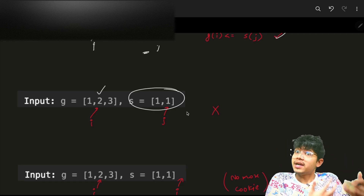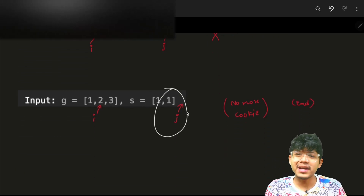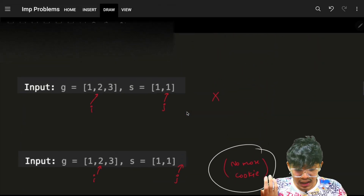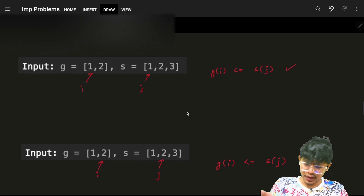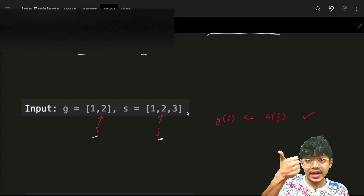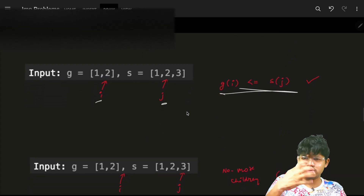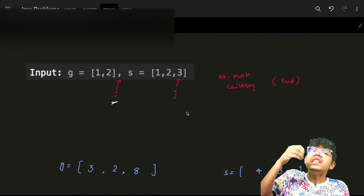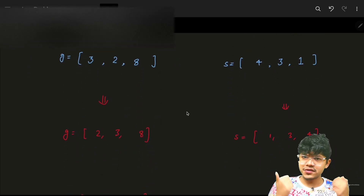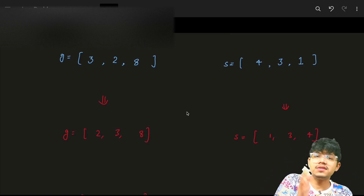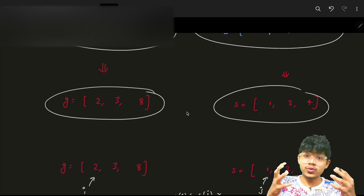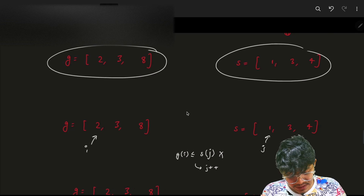Dry running example one: after sorting, we compare small greed values with small cookie sizes. The first pair is valid — move both i and j. Next, greed is two but cookie size is one, not valid — move only j. j reaches the end, so answer is one. In example two: first pair valid — answer one, move both. Second pair valid — answer two. i reaches the end, all children satisfied, answer is two.